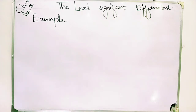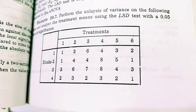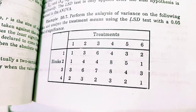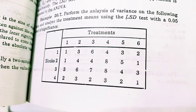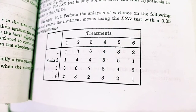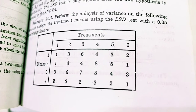How do you solve it? First of all, I will show you an example, and then I will show you a method so that you can easily understand it. Students, this is an example: perform the analysis of variance on the following data and analyze the treatment means using the LSD test with alpha. Whenever you have a question, it will be mentioned that you have to use the LSD test.